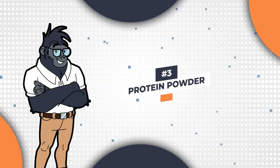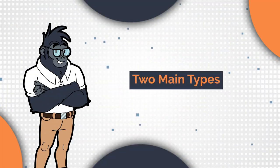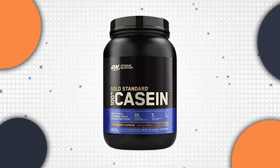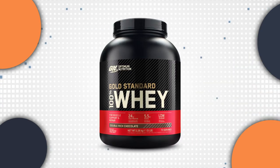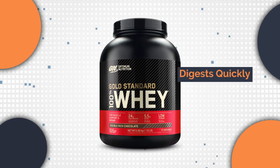Number 3. Protein Powder. There are two main types of protein powder, whey and casein. While casein is a slow digesting protein that can be a good meal replacement, it can also cause digestive issues for some people. Whey protein, on the other hand, digests quickly and is a popular choice for post-workout recovery.